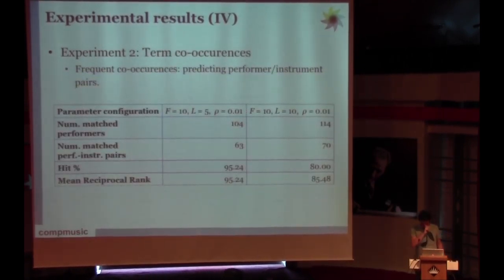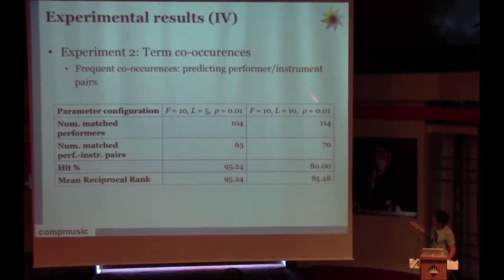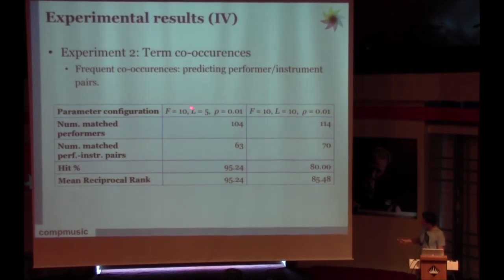In the second experiment, we dealt with term concurrences, so how concurrent are two terms, which means how many times two terms have an edge. In this case, we only analyzed the performer-instrument pairs, so we wanted to extract which is the instrument of a performer. In this case, instrument, we also considered vocalist as an instrument. We defined two configurations of our parameters. This is actually the one we followed, but this is just as a comparison. We could match 104 performers and 63 performer-instrument pairs.